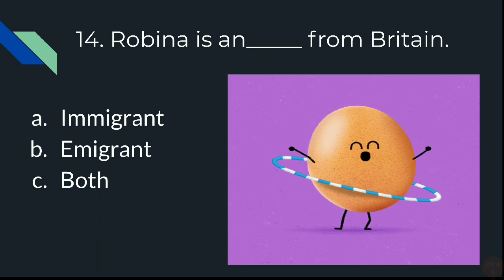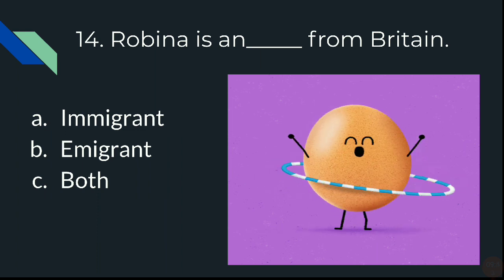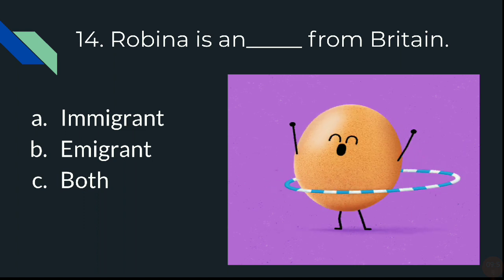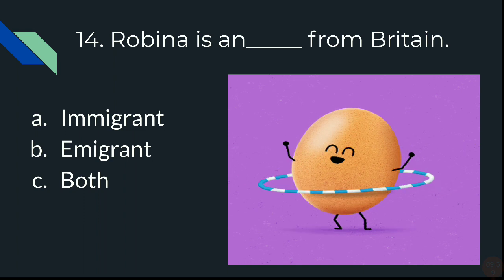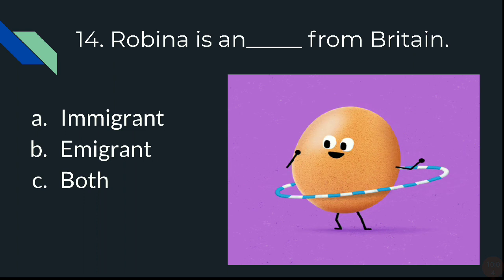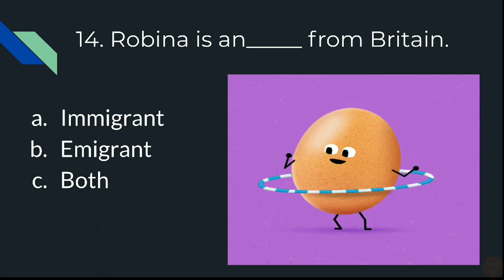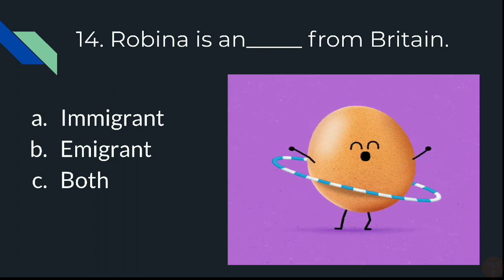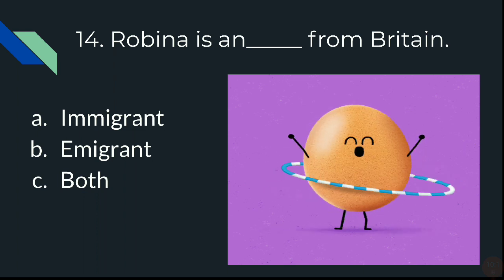Question 14: Robina is a Dash from Britain. Is she A) An immigrant from Britain, B) An emigrant from Britain, or C) Both from Britain? I think these questions are very easy. You can also use the trick I told you in a previous video on how to identify immigrant or emigrant.